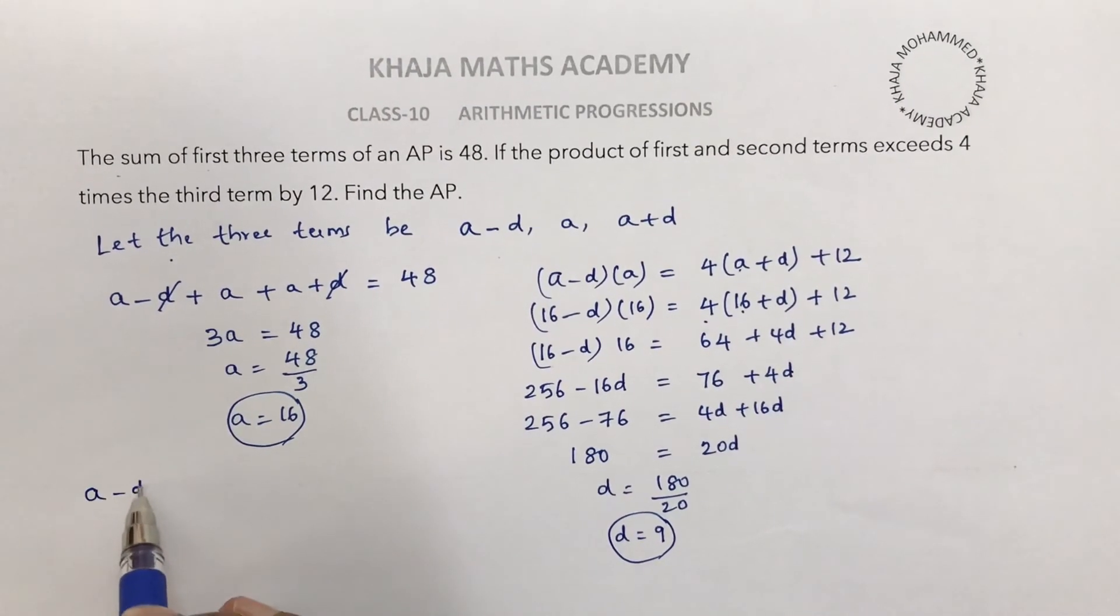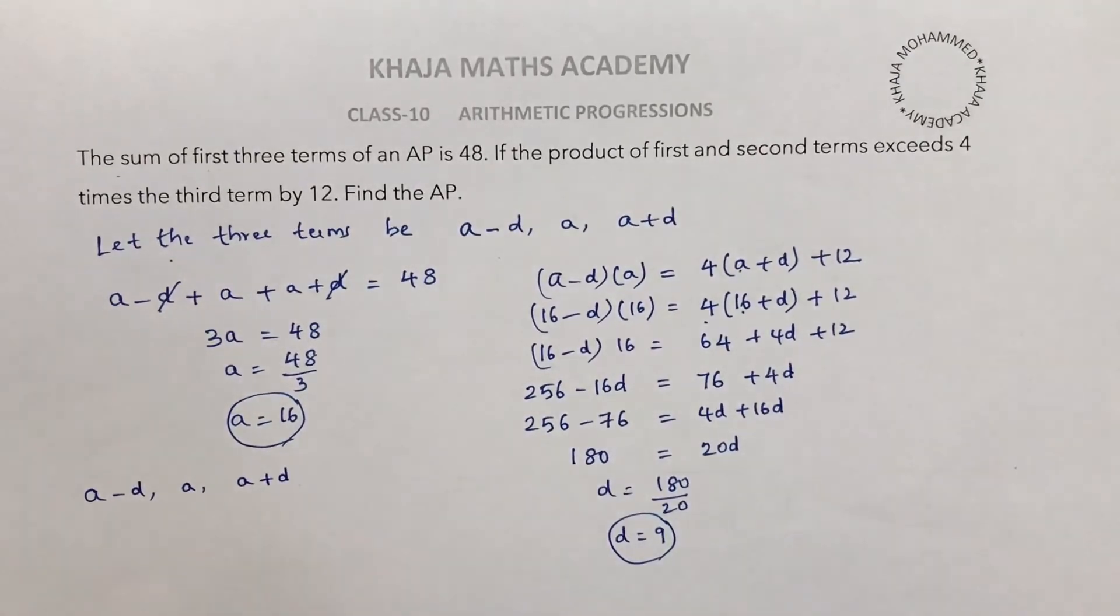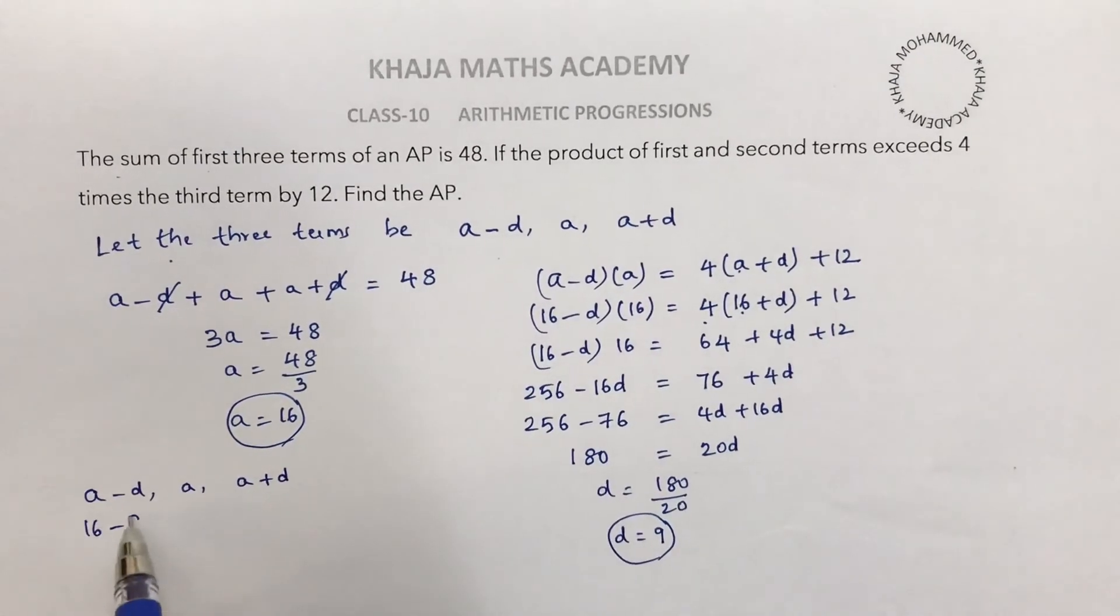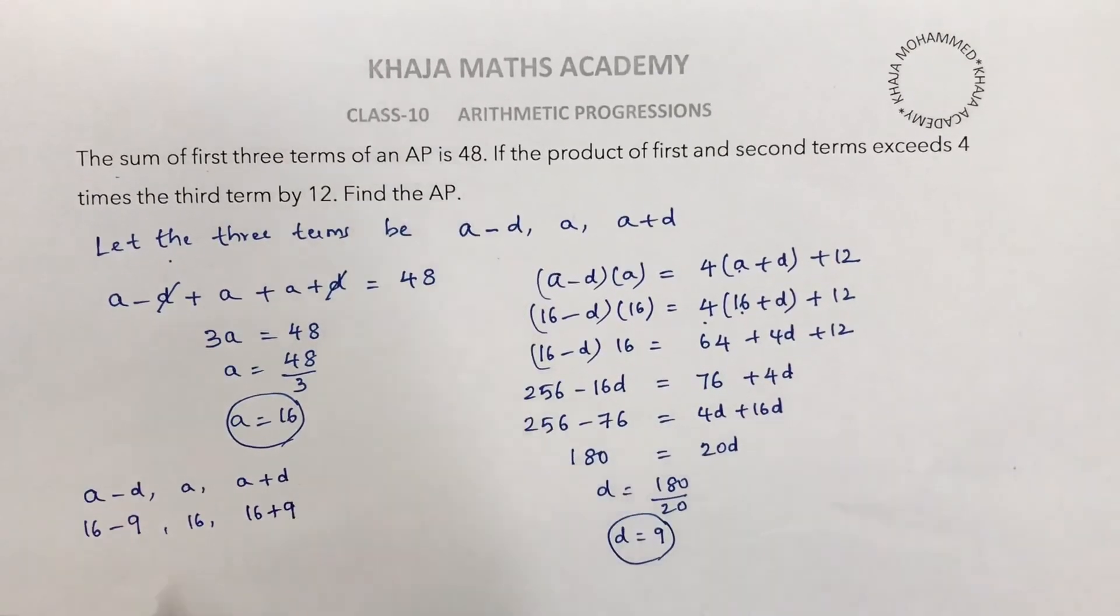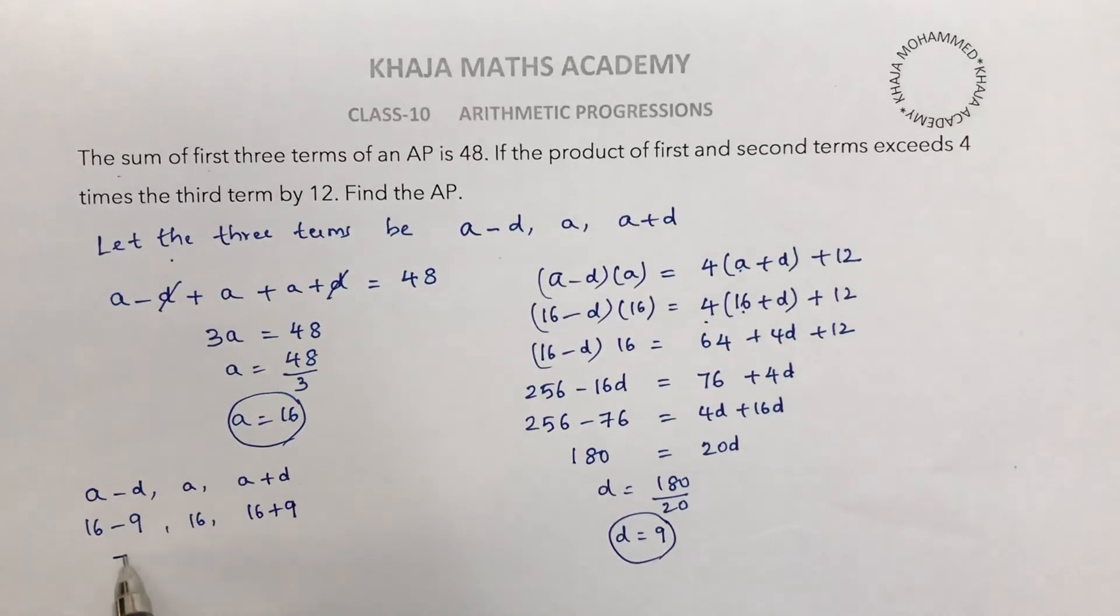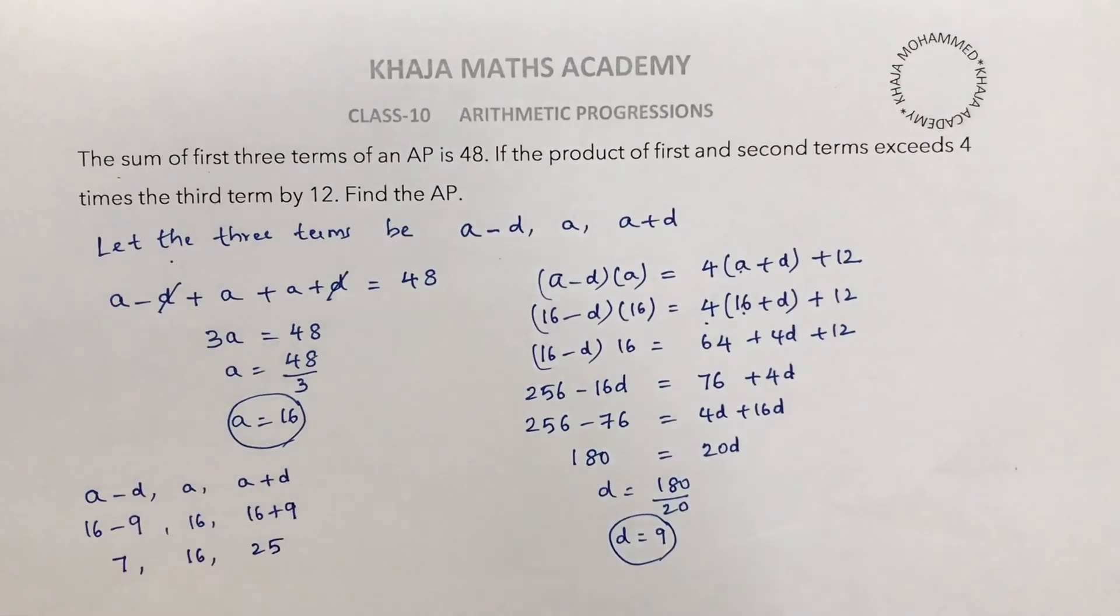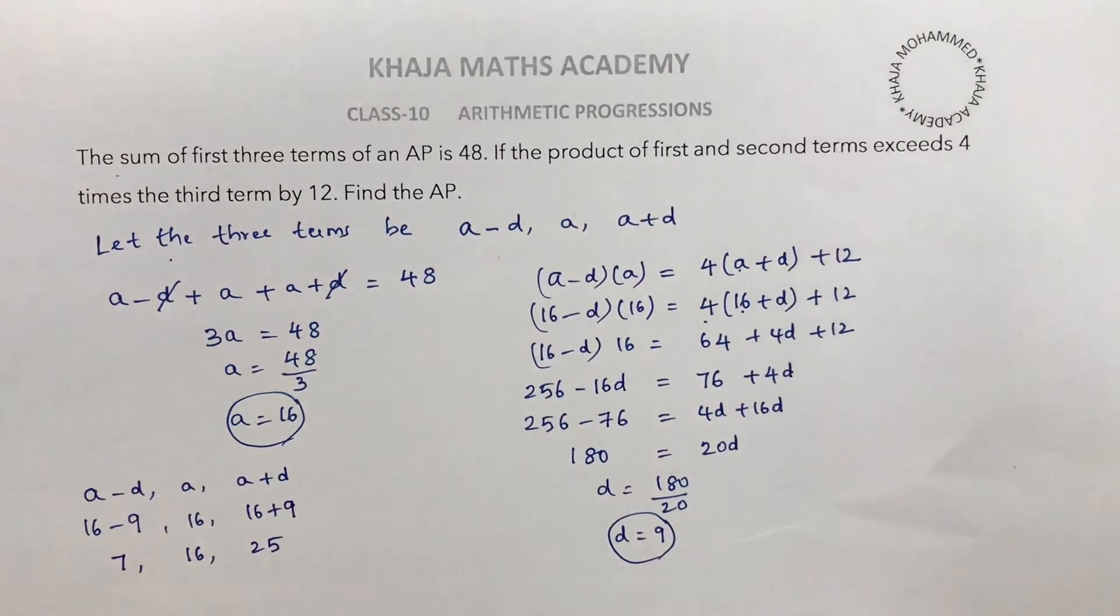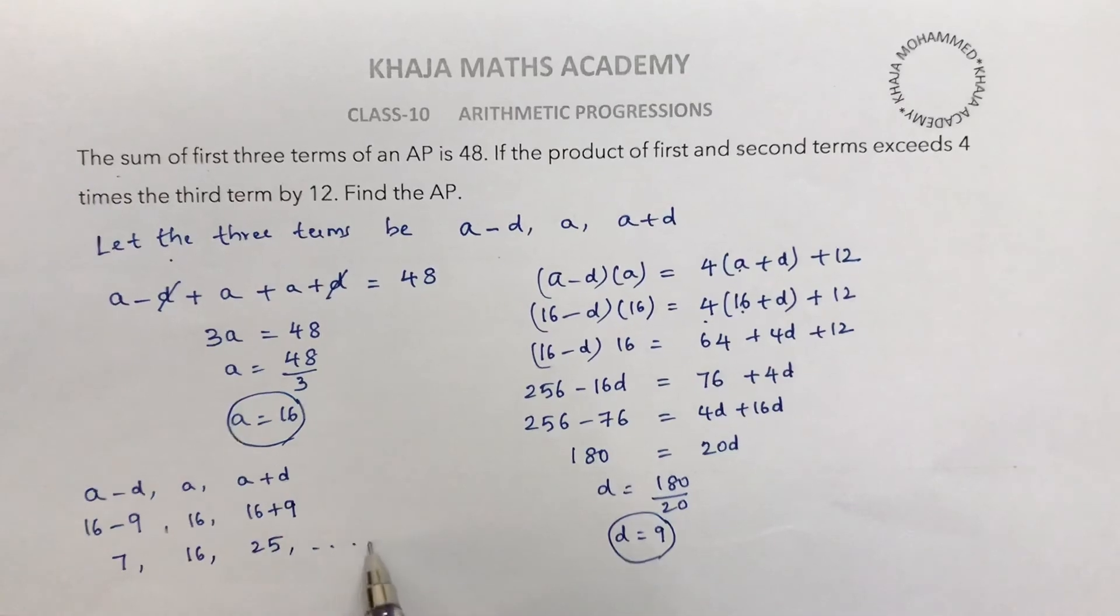We already took three terms as a-d, a, and a+d. So if a is 16: 16 minus d, 16, 16 plus d. That's 16 minus 9 is 7, 16, and 25. So we got the series: 7, 16, 25, and so on.